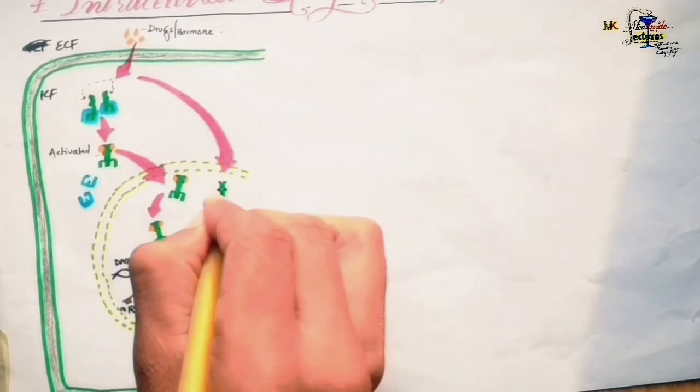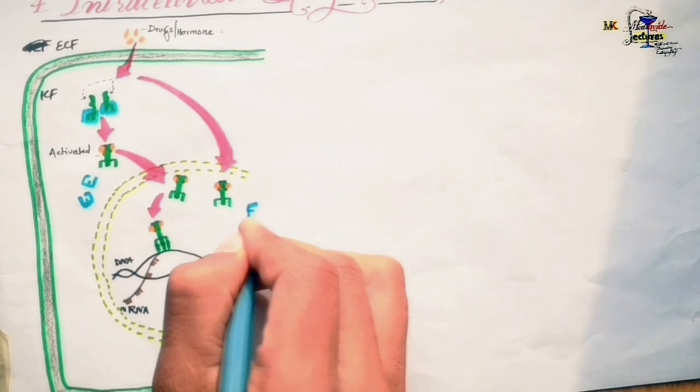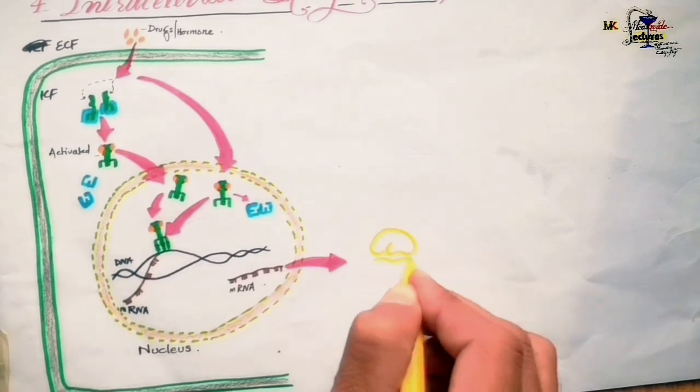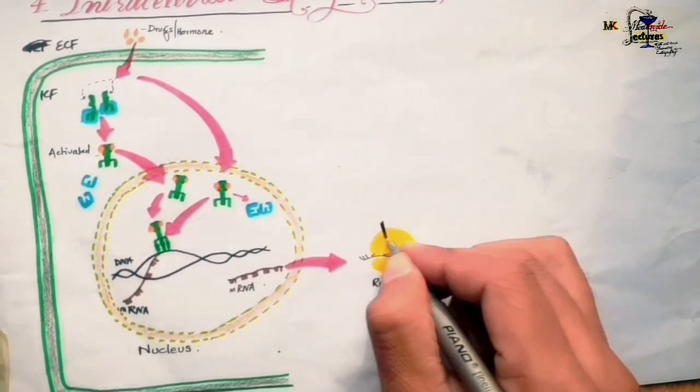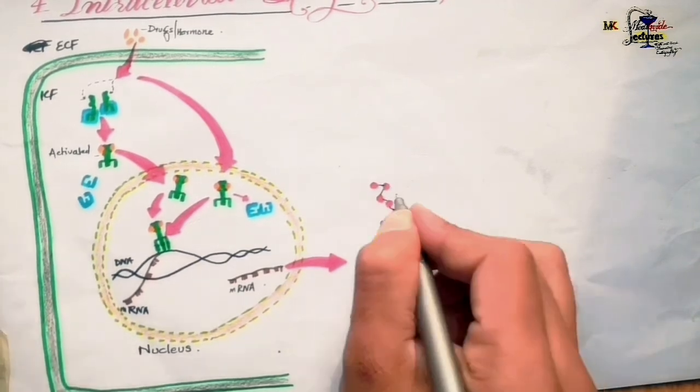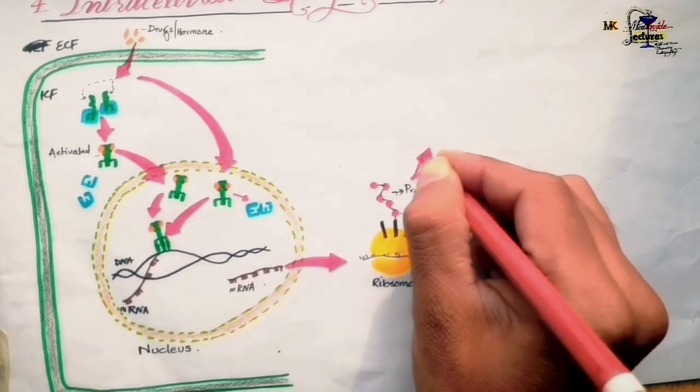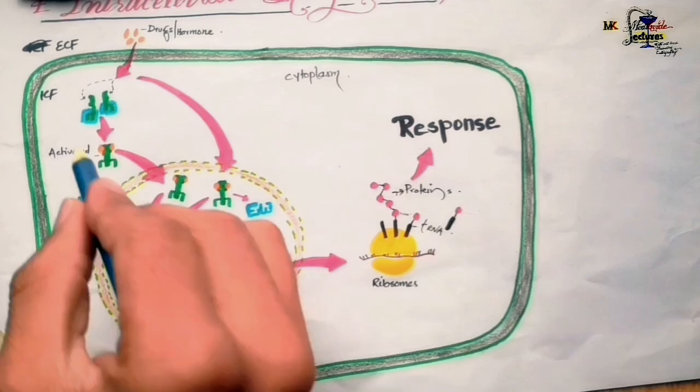After binding of the drug, conformational changes occur in the receptor; it loses inhibitory proteins that kept it inactive in the absence of ligand, becomes activated, and is transported to the nucleus. There it results in the formation of mRNA from DNA. In another case, the receptor may already be found inside the nucleus, and drugs may be directly transported to the nucleus to bind the receptor in the same manner. This activated receptor also results in mRNA formation from DNA. The mRNA is then transported to the cytoplasm and translated by ribosomes, with the help of transfer RNA, into proteins that carry out the actual action of the ligand.